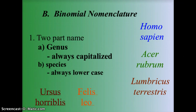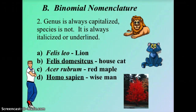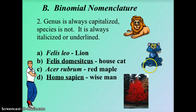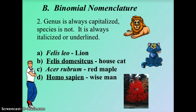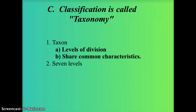Here are some examples. A lion is called Felis leo. This house cat is Felis domesticus. This red maple tree is referred to as Acer rubrum. And humans call ourselves Homo sapiens — meaning 'wise man,' though some of us are not so wise.